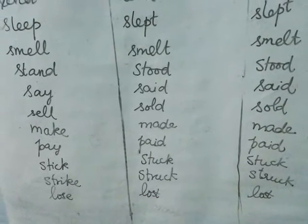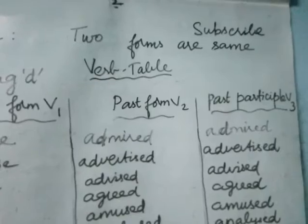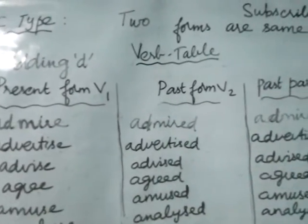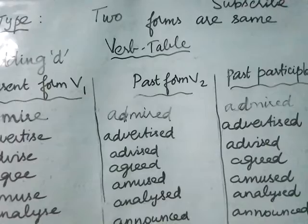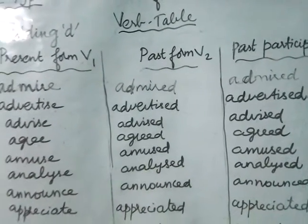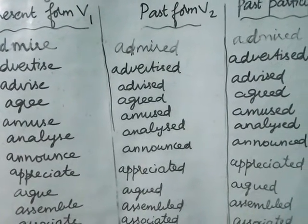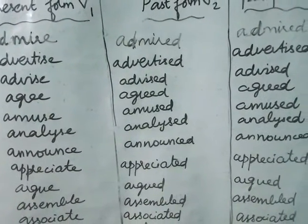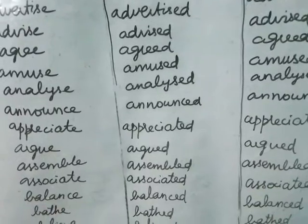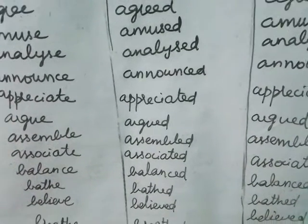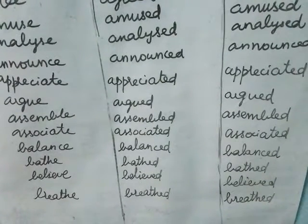Strike, struck, struck; lose, lost, lost. Now, two forms are the same by adding '-ed' to the present form. Examples: admire, admired, admired; advertise, advertised, advertised; advise, advised, advised; agree, agreed, agreed; amuse, amused, amused; analyze, analyzed, analyzed; announce, announced, announced; appreciate, appreciated, appreciated; argue, argued, argued; assemble, assembled, assembled; associate, associated, associated.